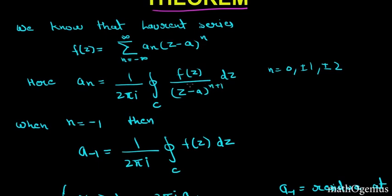Now for a special case when n is equal to minus 1, this term will vanish, this will give us 1. So when n is equal to minus 1 we have this.